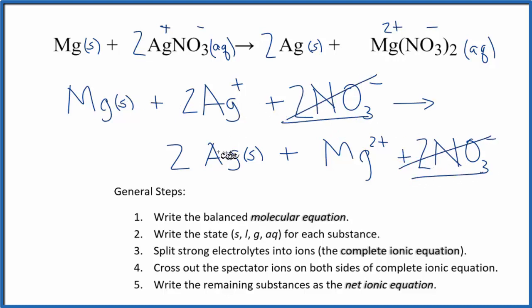But everything else is unique. This Ag plus, that's very different than Ag solid. And this magnesium solid, that's very different than this magnesium ion, which would be aqueous. So let me clean this up, and we'll have our net ionic equation.